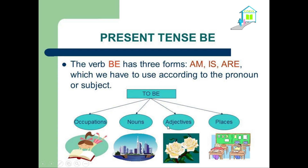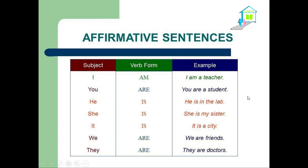We can use the verb to be to describe adjectives — for example, white, clear, smart, big, and small. This is the affirmative form of the verb to be.